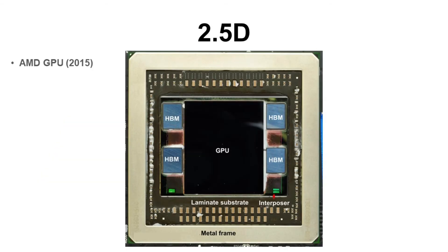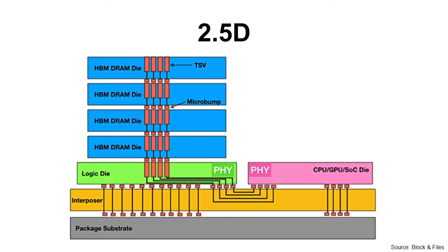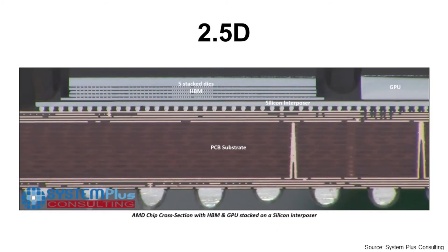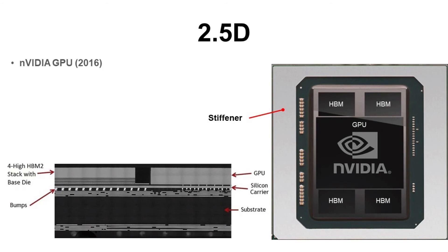Another example is a GPU from AMD in 2015. AMD combined GPU and HBM. Compared with the previous solution — GPU plus GDDR graphic memory — its size was much smaller with better performance. This is a cross-section of the GPU plus HBM combination. HBM by itself also has multiple DRAM die stacks and TSV inside the DRAM die. An SEM image of the actual product looks like this. NVIDIA also had a GPU plus HBM combination in 2016.